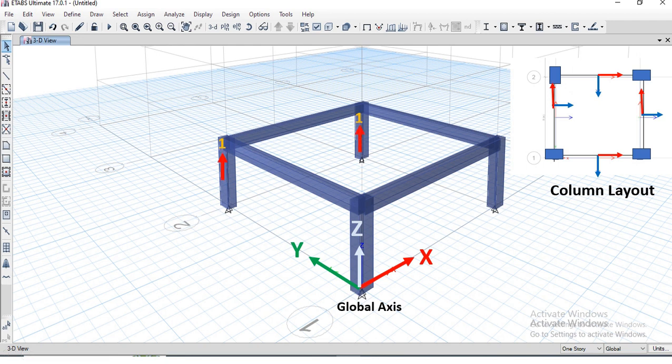Local axis 1 is along length of member. And we can see local axis 2 is along larger dimension, and 3 along shorter dimension in cross section.